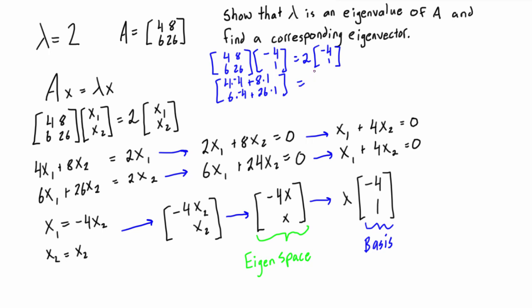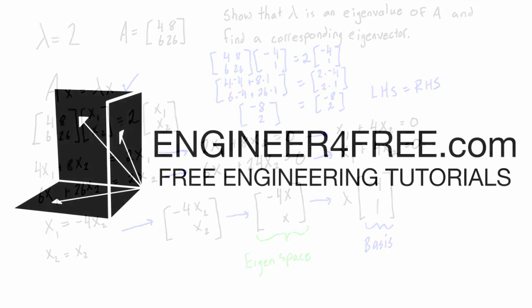The right-hand side, we can distribute this in, so we get 2 times negative 4 and 2 times 1. This reduces: the first element goes to negative 8, second element is 2, and then on the right-hand side we also get negative 8 and 2. So that is awesome. The left-hand side equals the right-hand side, and ultimately that's what we were looking for here—that this expression checks out because we have used proper eigenvalues and eigenvectors.